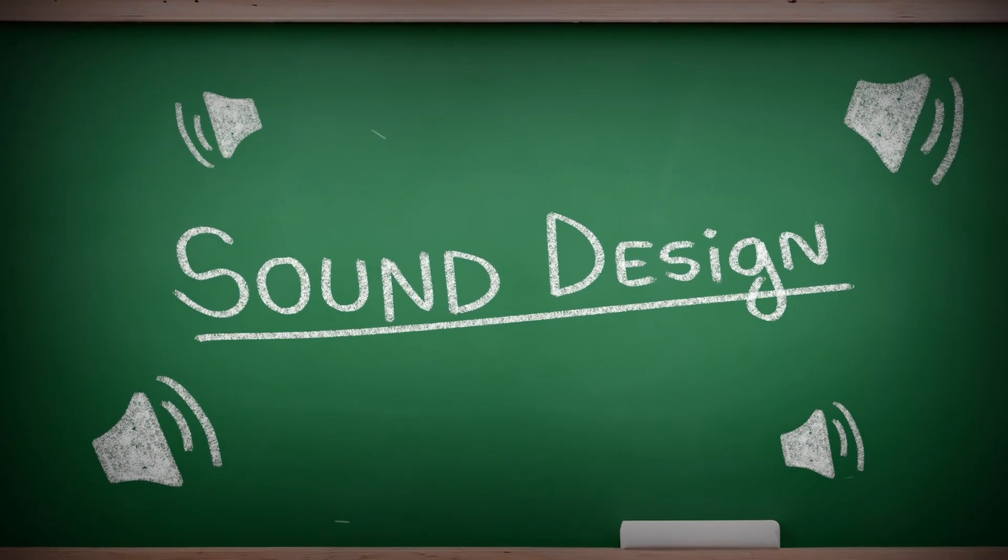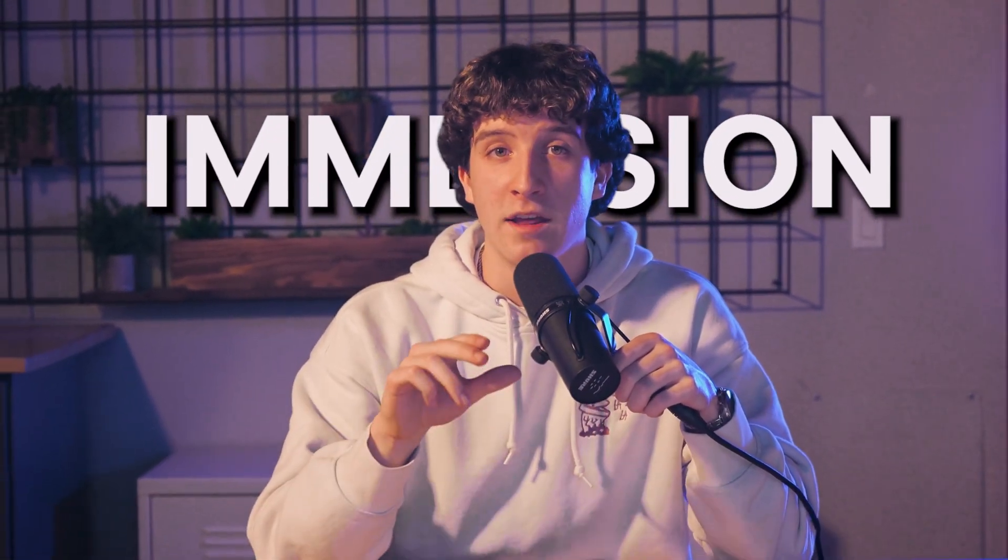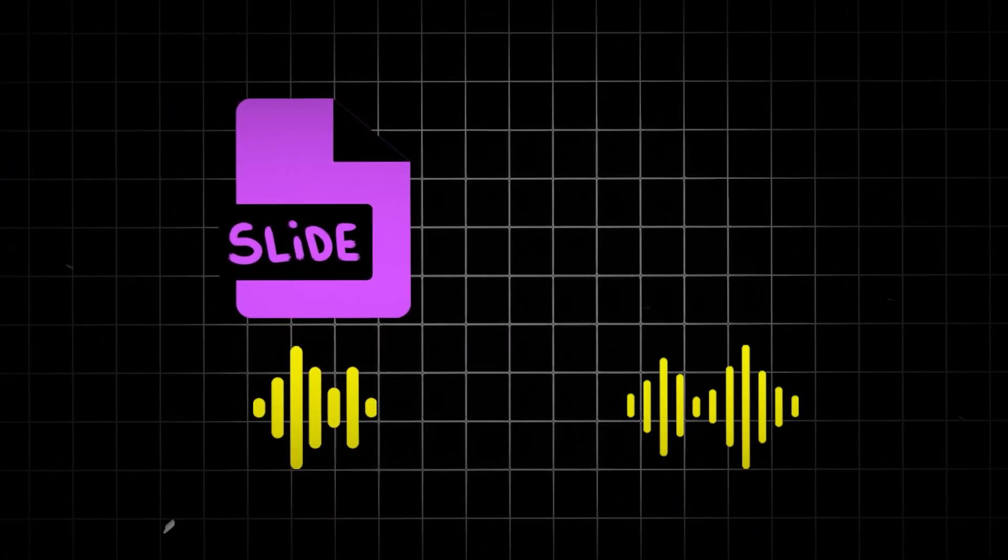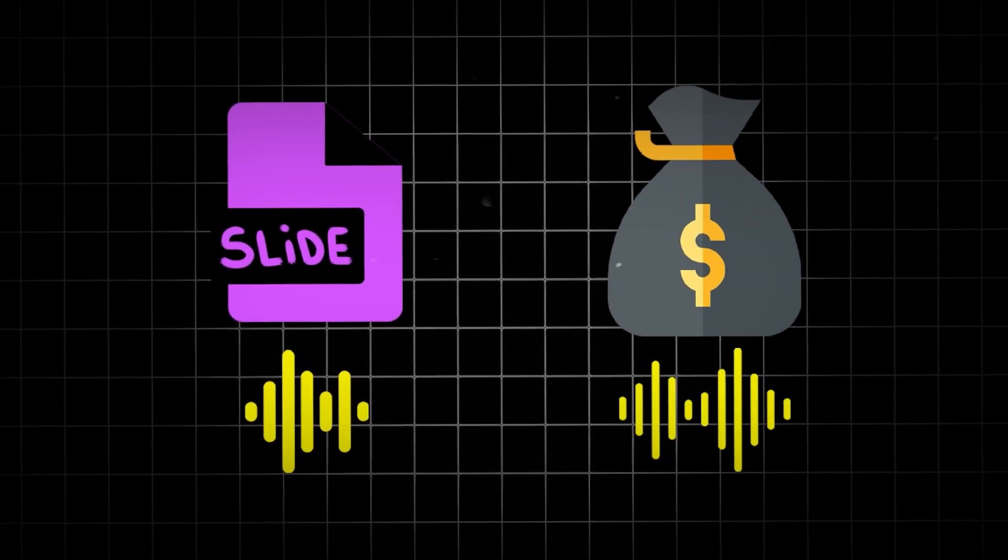Number five is to focus on sound design. Sound design is crucial for creating immersion in your video, and that doesn't mean everything needs a sound. But for example, if an icon slides onto the screen, you're going to want to have a sliding noise. If money falls on the floor, you're going to want to have a noise for the money and so on. Or if you're using actual footage in your video, you can even artificially improve sounds to get the exact same effect.